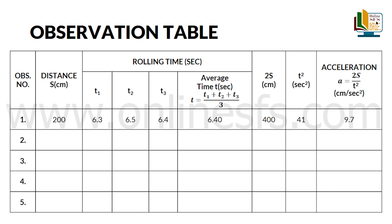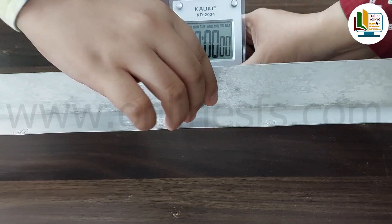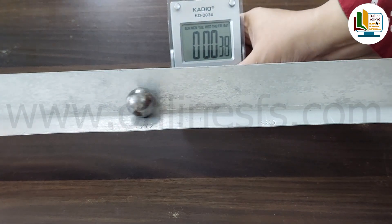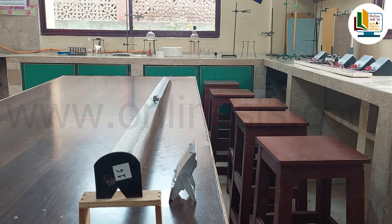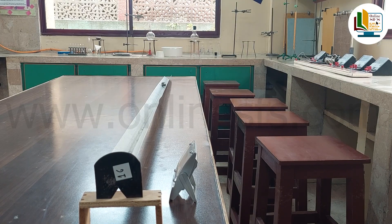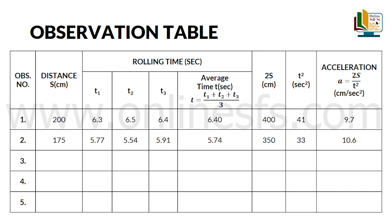Now, we will hold the ball at 175 cm for our second observation and follow the same procedure to note down t1, t2 and t3 and write in the observation table. For our second set of observations, t1 was found to be 5.77 seconds, t2 5.54 seconds, t3 5.91 seconds and the average time t equals to 5.74 seconds.